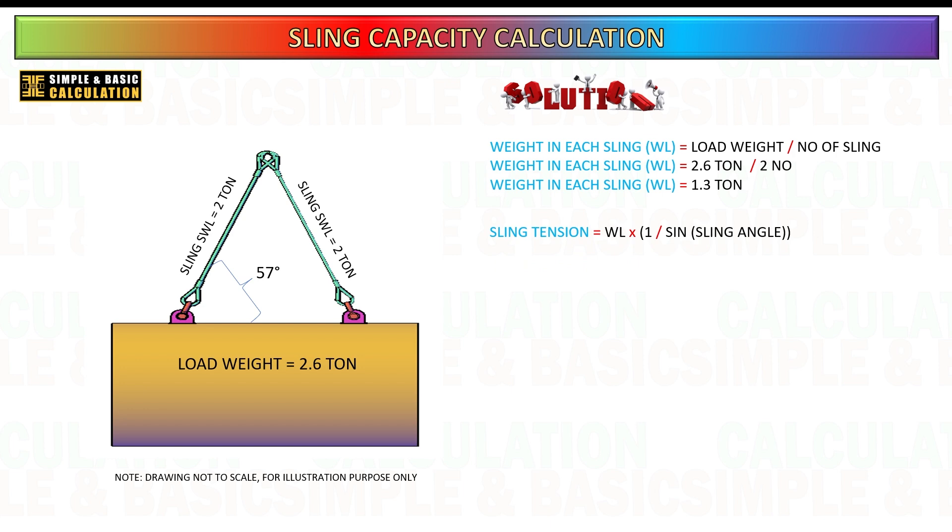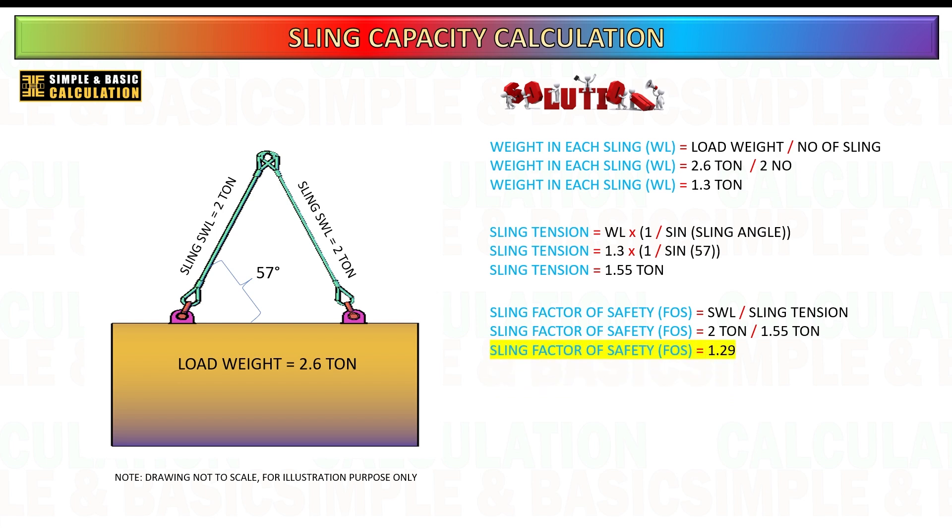Next, the tension in each sling is calculated. This is done by multiplying the load on each lifting point by the reciprocal of the sine of the sling angle. Following this, the factor of safety for the sling is assessed. The FOS is determined by dividing the safe working load of the sling by the calculated sling tension. The rigging setup is typically considered safe according to the calculations performed.